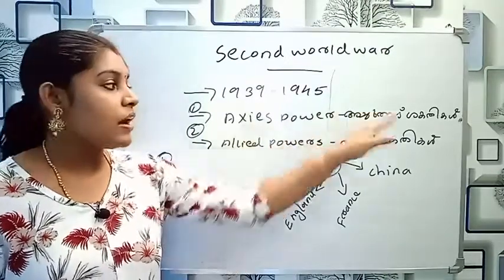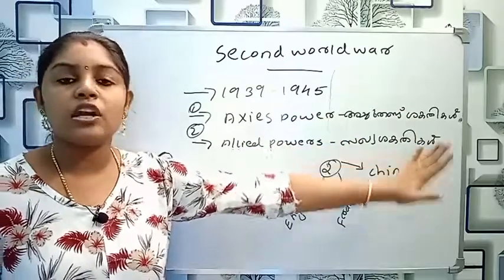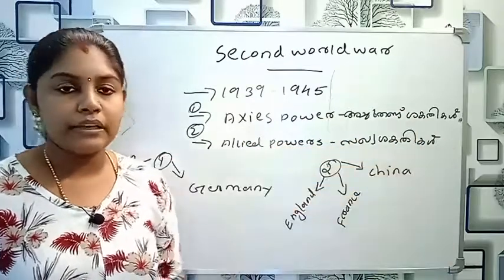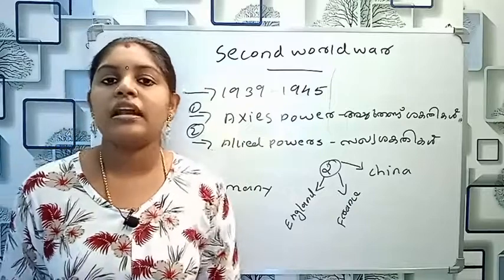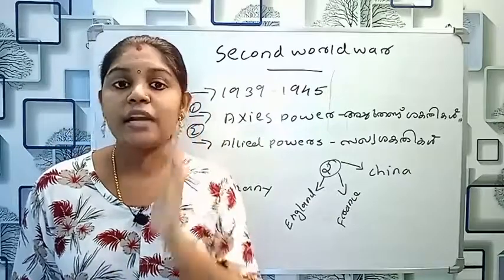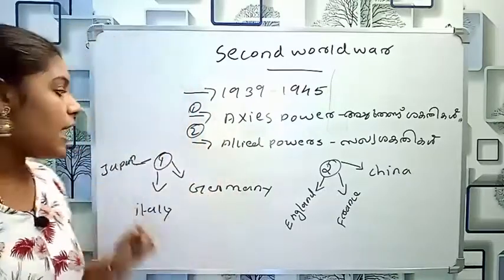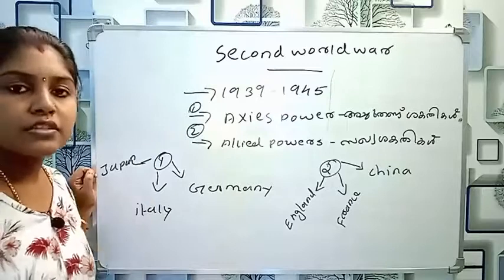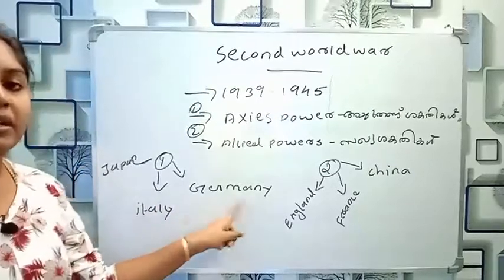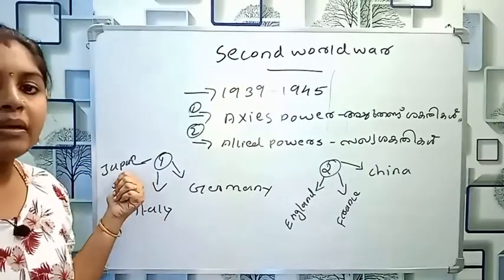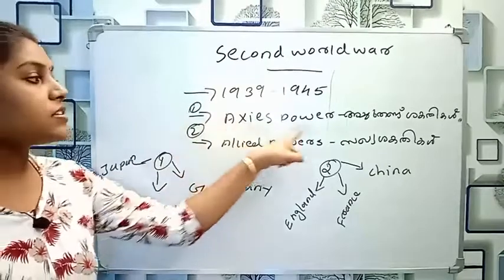The Axis Powers are Germany, Italy, and Japan. Germany, Italy, Japan is the Axis Power.